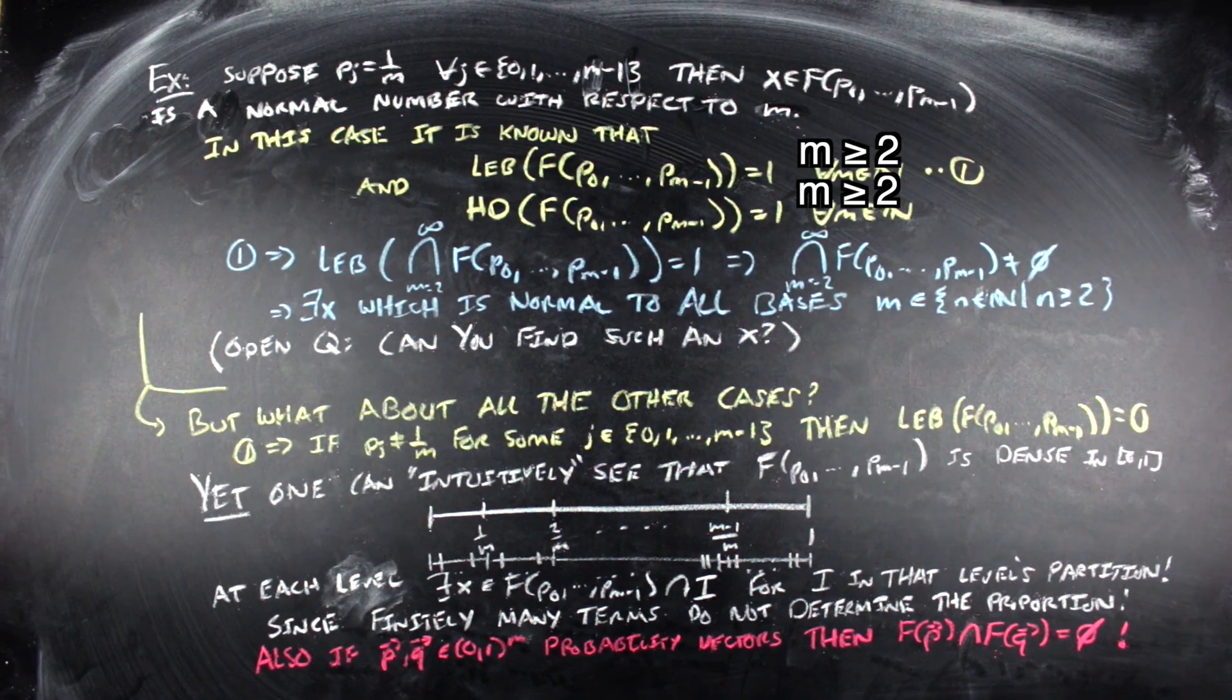So you have all of these disjoint, different, measure zero, dense sets in the closed unit interval from zero to one, and you need a thing or a device or a mathematical tool to tell them apart. And the question is, how do you do that? And you do it with Hausdorff dimension.